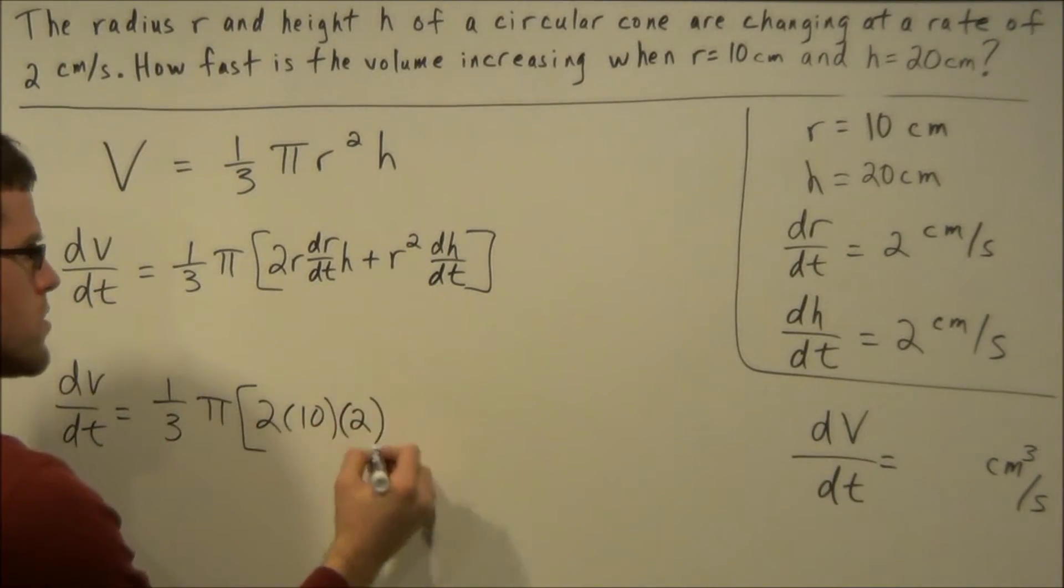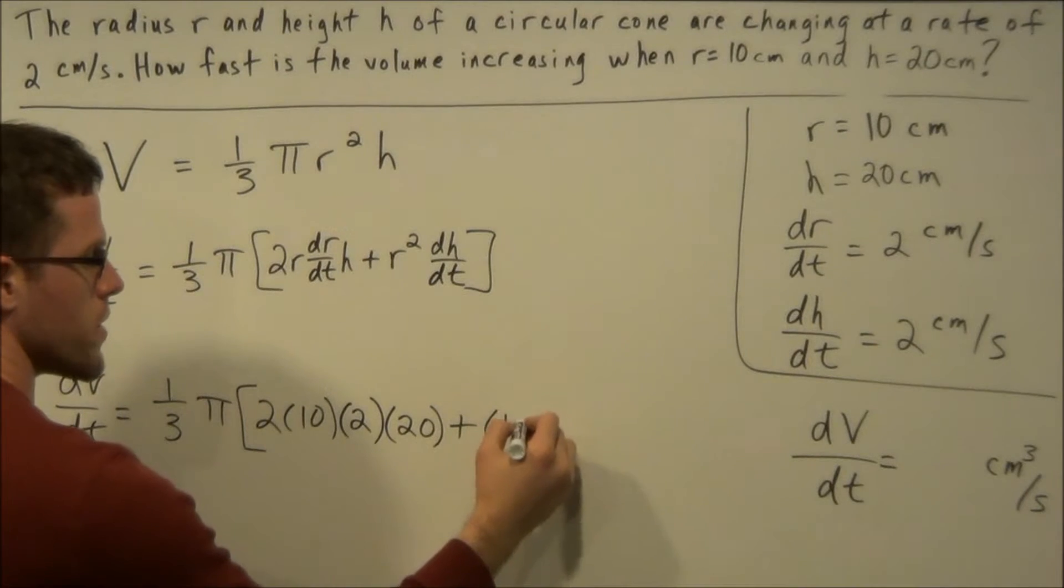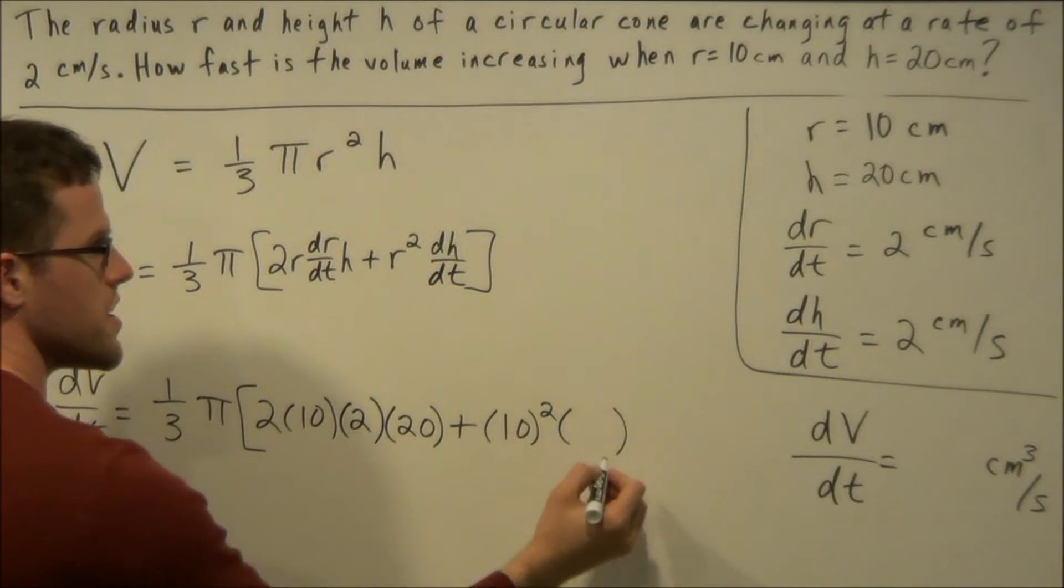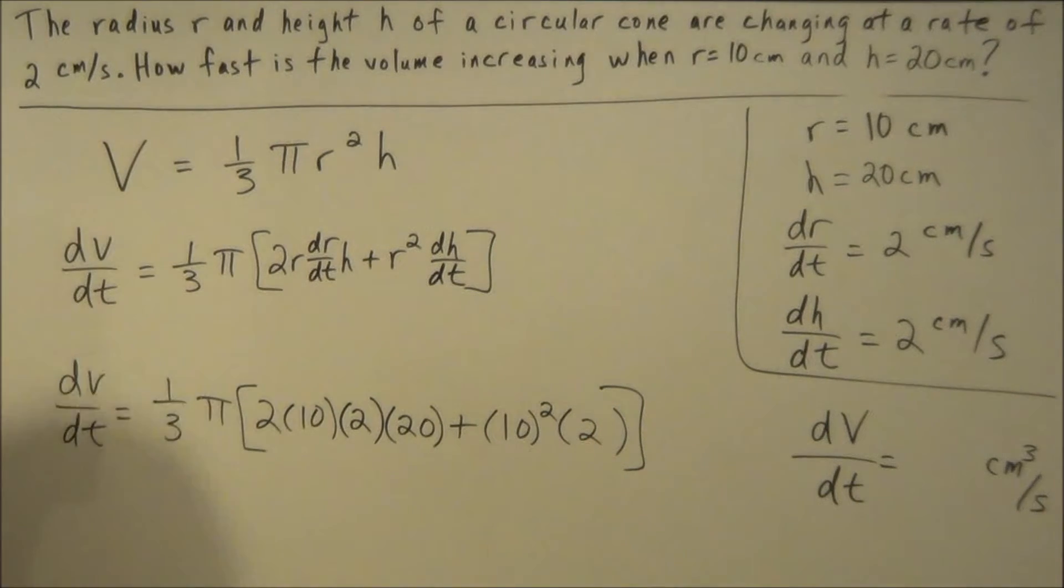So we have times 2 times h is equal to 20 and then plus r squared. So we're going to have 10 squared times dh/dt is 2. And now we could close this bracket here.